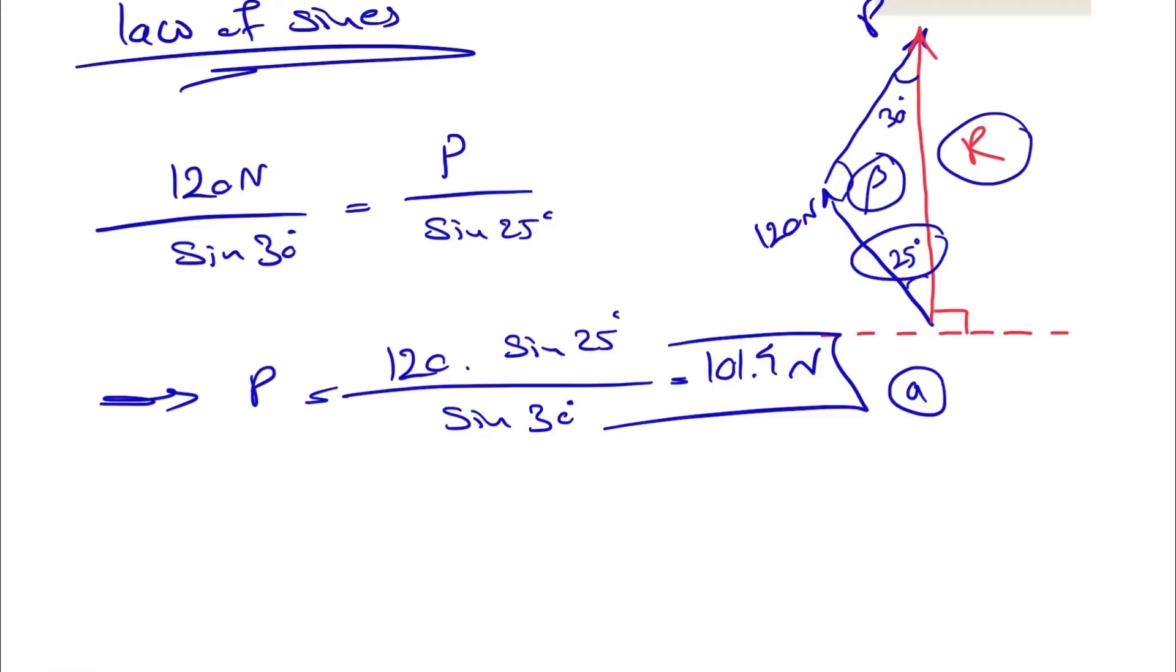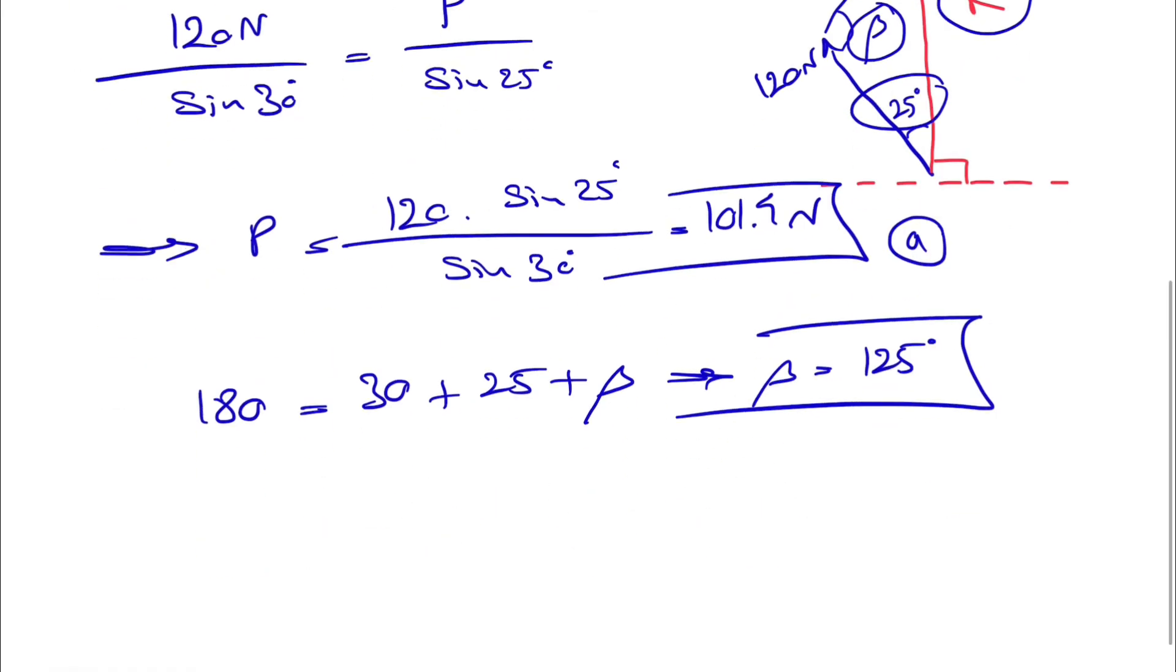But what we know is that the sum of all the angles in the triangle is 180, and what we have is one of the angles is 30, the other one is 25, and the last one is beta which is what we are looking for. We can find beta in here which will be 125 degrees, and there we go.